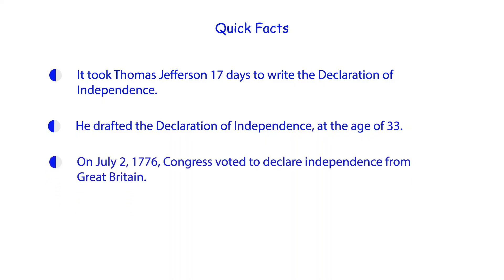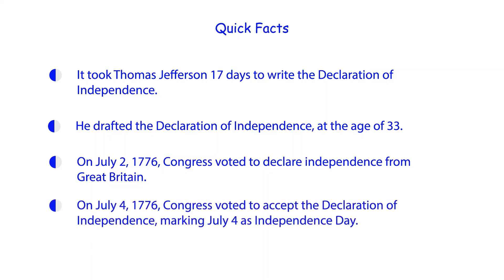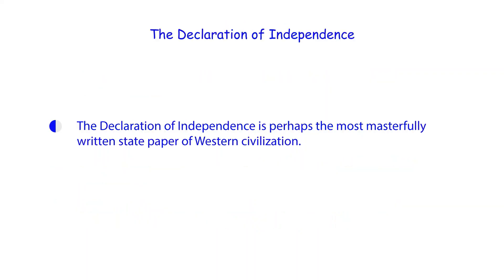On July 2nd, 1776, Congress voted to declare independence from Great Britain. And on July 4th, 1776, Congress voted to accept the Declaration of Independence, making July 4th Independence Day. The Declaration of Independence is perhaps the most masterfully written state paper of Western civilization.